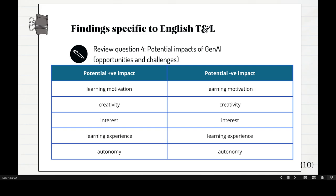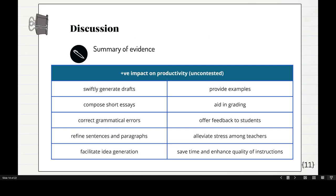However, there is one area that is overwhelmingly uncontested — positive impact on productivity. Everybody thinks this is what Gen.AI is good for: generating drafts and short essays, correcting grammatical errors, refining sentences and paragraphs, facilitating idea generation, providing examples, aiding in grading, offering feedback to students, alleviating stress for teachers, and saving time to enhance quality of instruction. Nobody complained about anything here — everybody agreed.